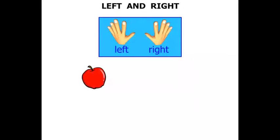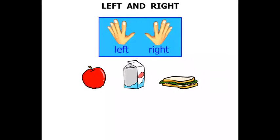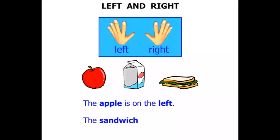So if we have an apple, a milk carton, and a sandwich, we could say that the apple is on the left, the sandwich is on the right. What about the milk? Well, the milk is in the middle.